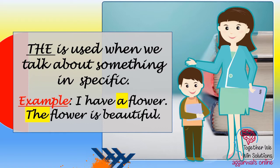Let's see an example. 'I have a flower. The flower is beautiful.' Because I discussed about a flower generally — it can be any flower, not any particular flower — I say 'I have a flower.' Now, article 'the' can be used while talking about the same flower, so I can say 'The flower is beautiful.' So: 'I have a flower. The flower is beautiful.'